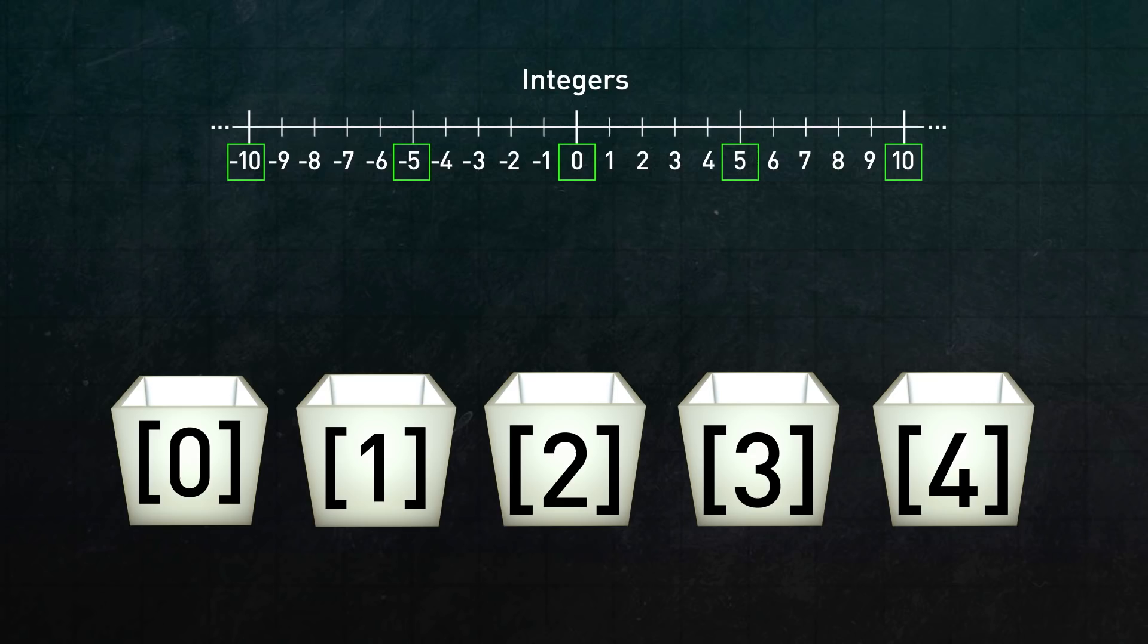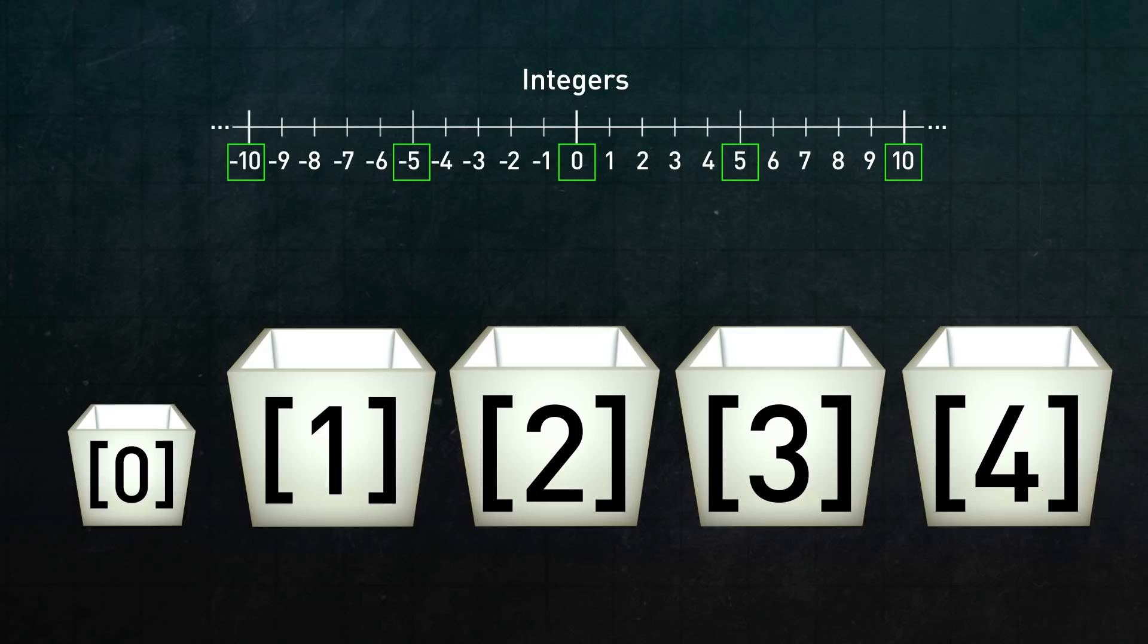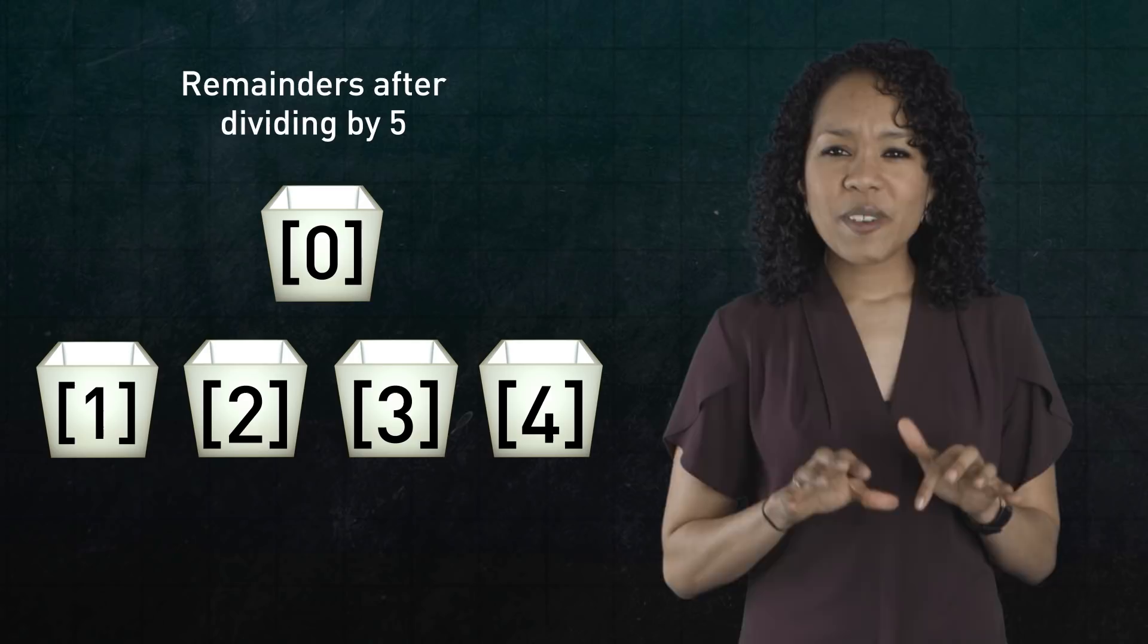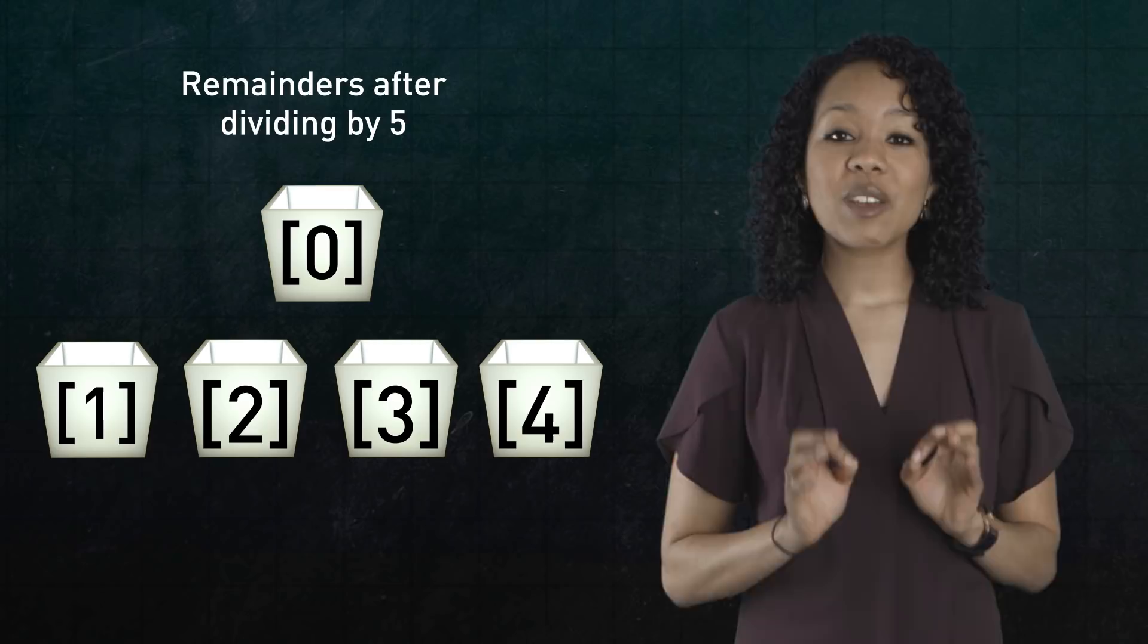The upshot is that integers essentially come in 5 flavors, those that are multiples of 5 and those that aren't, of which there are 4 varieties. Once we partition the integers in this way, the individual numbers themselves aren't so important anymore.